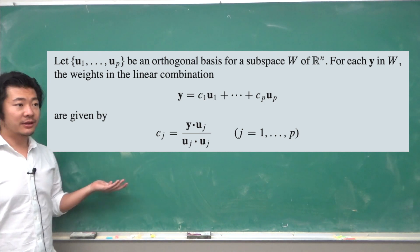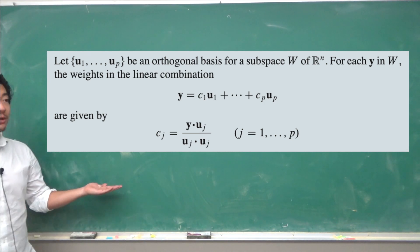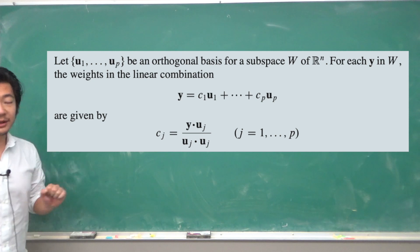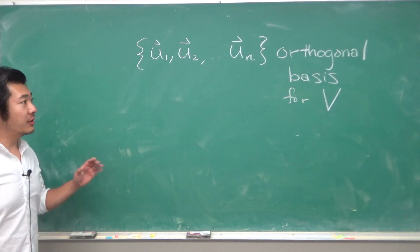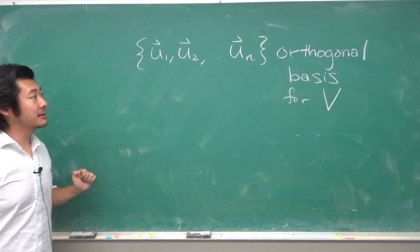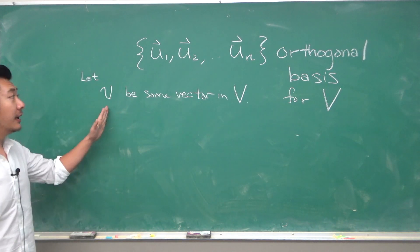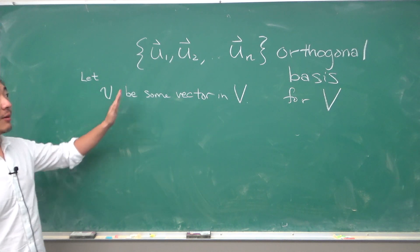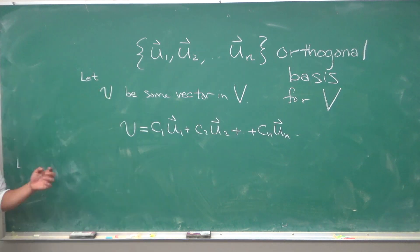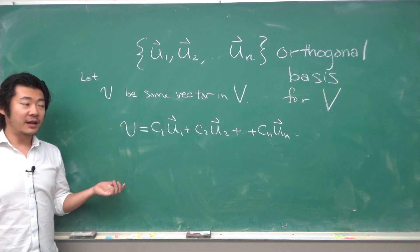This isn't too hard to show. Suppose we have an orthogonal basis for some subspace V. Let v be some vector in V. Then you know that v can be written as a linear combination of the basis vectors. But what are the scalars c1 to cn?